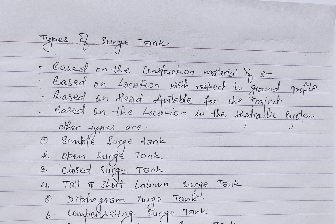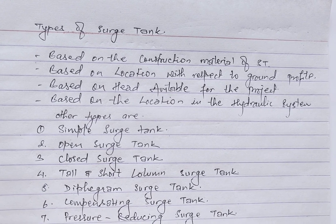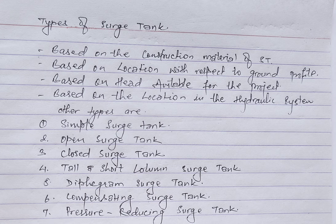A compensating source tank is designed to compensate for variable demand in water supply, helping to maintain a more consistent pressure. A pressure reducing source tank is designed to reduce high pressure within a system — it releases excess fluid when pressure exceeds a pre-determined level.